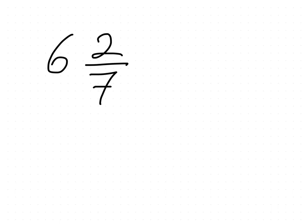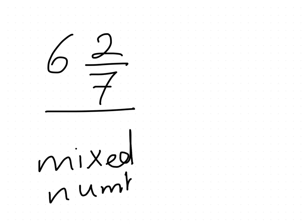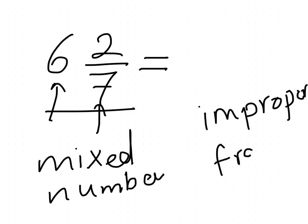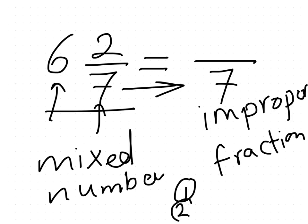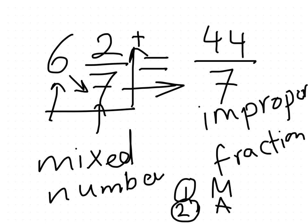Now we have 6 and 2/7. It's a mixed number because it mixes a whole with a proper fraction. To convert it to an improper fraction: multiply the whole by the denominator — 6 by 7 is 42 — then add the numerator: 42 plus 2 is 44. So the answer is 44/7. Please practice so you will get a full understanding. Thank you.